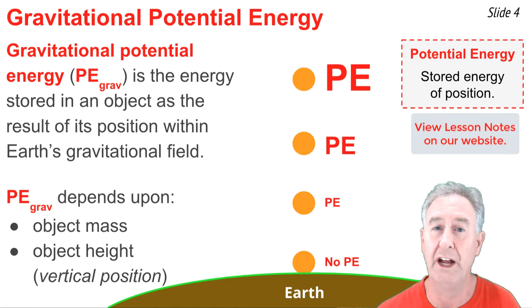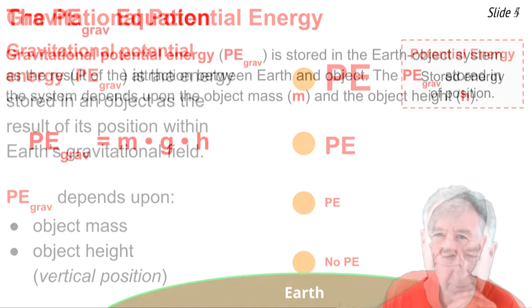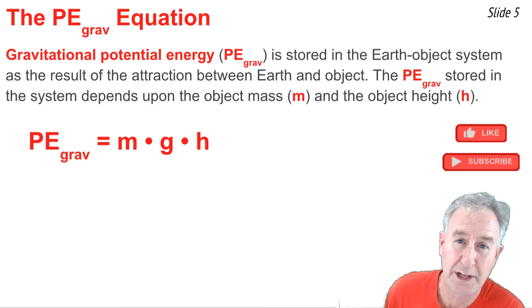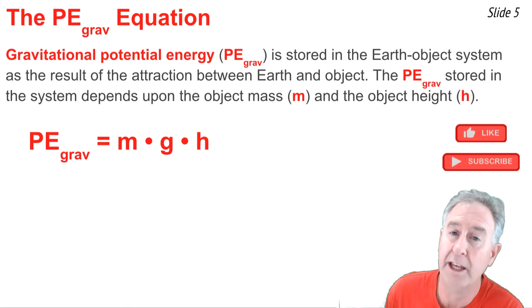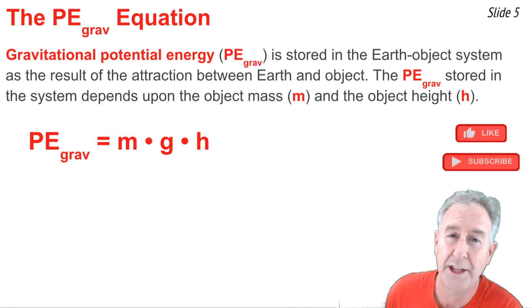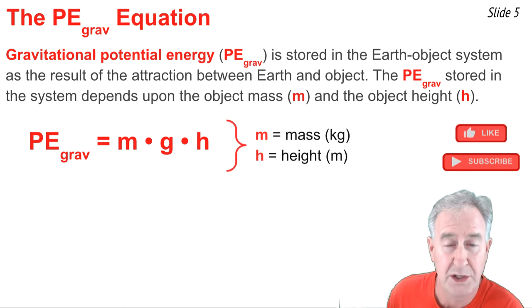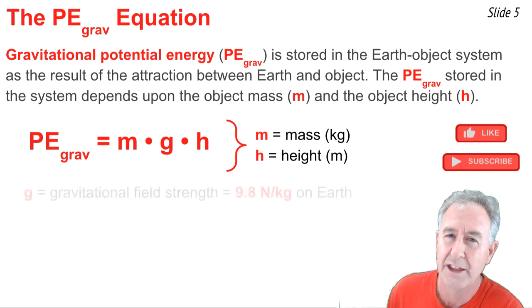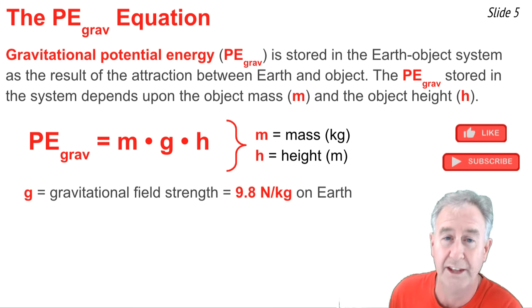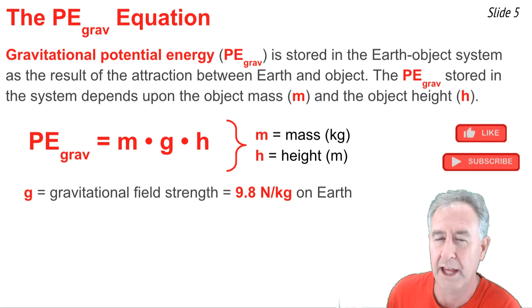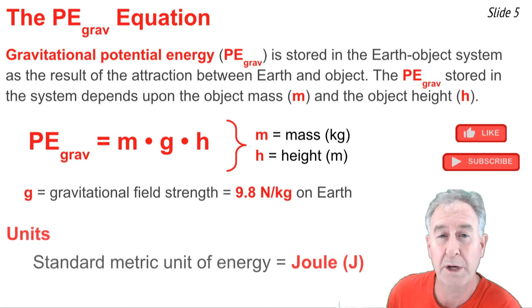This is the energy stored in an object due to its vertical position. The amount of potential energy stored in the Earth-object gravitational system depends upon two variables: the mass of the object, denoted by m, and the height of the object, denoted by h. The equation expressing this dependency is PE = m × g × h. Here, m is mass in kilograms and h is height in meters. The g represents the gravitational field strength; on Earth, its value is 9.8 newtons per kilogram. Some teachers approximate that to 10 N/kg. The standard unit of energy is the joule, abbreviated J.